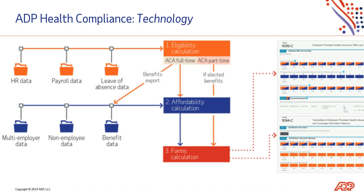This is a high-level view of the data flow from our client systems into ADP Health Compliance. The files — HR, payroll, leaves of absence, multi-employer, non-employee, and benefits data — are all generated from our client systems of record. ADP Health Compliance loads these files throughout the month. The product performs three calculations: eligibility, affordability, and forms, resulting in populated Forms 1095C and 1094C. An important note is that ADP Health Compliance is platform agnostic and can receive files from any systems of record. Many of our clients have mixed systems — ADP, ERP, third party, as well as homegrown systems and processes. Note that this data is not only necessary for ACA IRS reporting, but also for the new state employer reporting requirements seen from states such as New Jersey, Washington D.C., California, and Rhode Island.